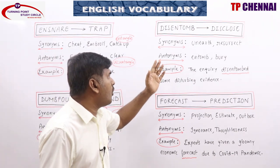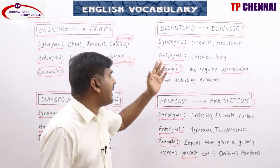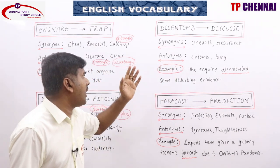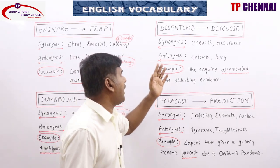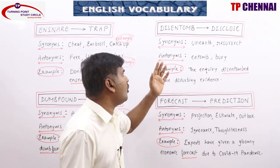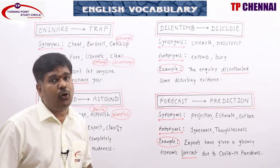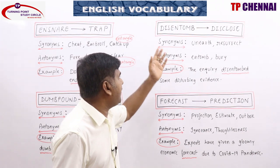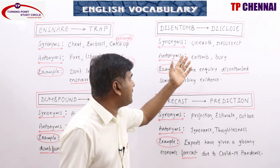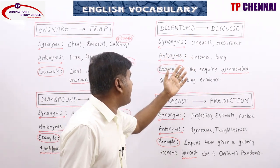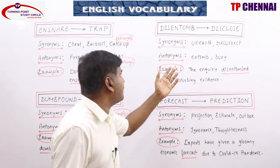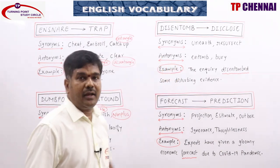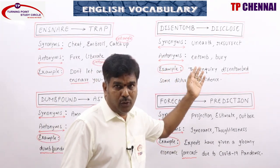Disentomb means disclose, unearthed, resurrect — to bring to light, bring to surface, to take out. Synonyms: unearthed, resurrect, excavate, expose, dig out, reveal, dig up, remove from the tomb.